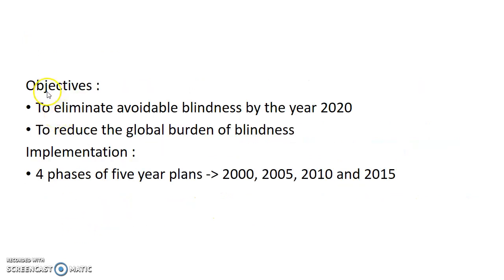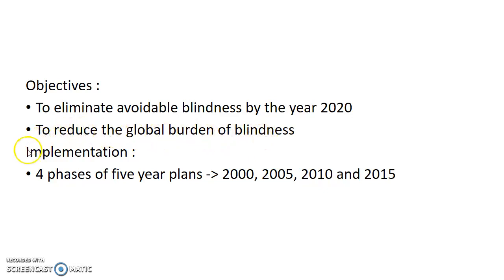The objectives of Vision 2020 are: to eliminate avoidable blindness by the year 2020, to reduce the global burden of blindness, and to improve the quality of life of those with unavoidable blindness.